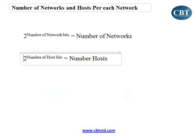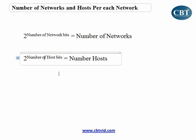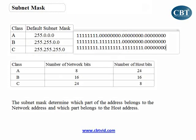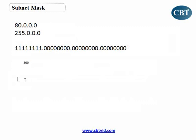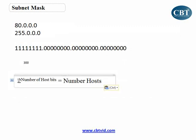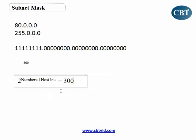To find this, we use the formula: 2 to the power of (number of host bits) equals the number of hosts. Here you have the number of hosts — it's 300.